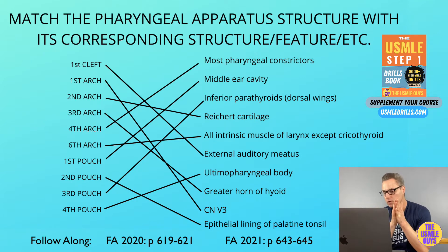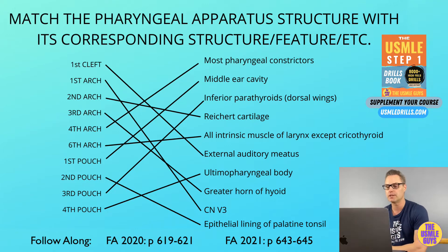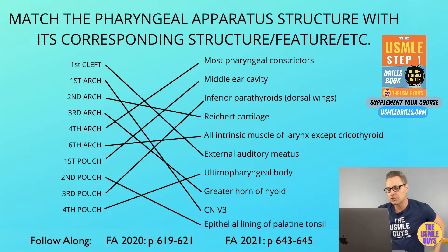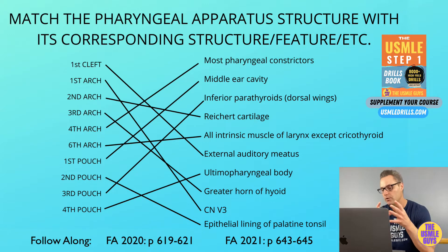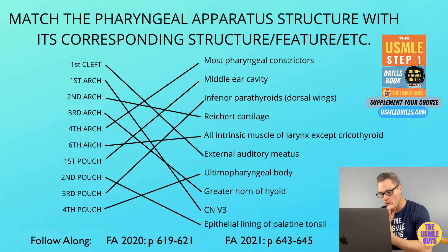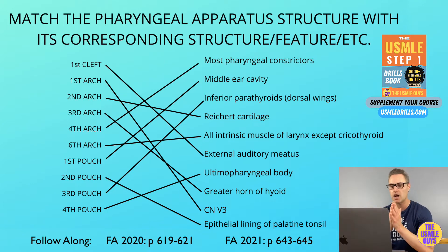The recurrent laryngeal branch also provides the efferent limb of the gag reflex and parasympathetic innervation to the viscera. Now let's finish off this section by discussing the pharyngeal pouches. The pouches separate the pharyngeal arches on the endodermal surface. While there are five pairs of pouches, only four give rise to structures in the adult.